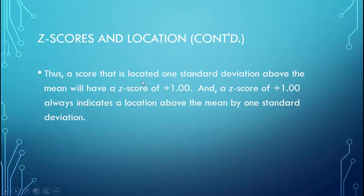So if you have a score that is one standard deviation above the mean, you know their z-score is going to be positive 1. And a z-score positive 1 always means that somebody scored one standard deviation above the mean.